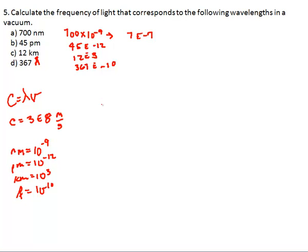And then for part a, we're going to make this 3e to the 8th, and then it's equal to 7e to the negative 7 nu. What I can do is rearrange this equation so it's c over lambda is equal to nu. And I divide this out, so it's 3e to the 8th over 7e to the negative 7th is equal to 4.29e to the 14th.